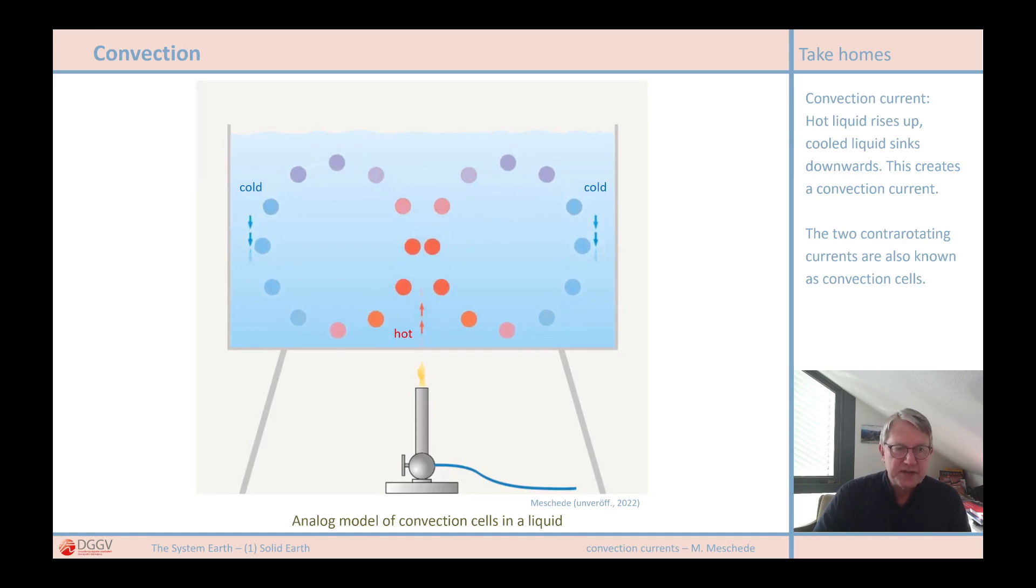Such convection currents can also be found in the Earth's mantle and most probably also in the Earth's core. The Earth's mantle is not liquid like water, but it is mobile, except that the movements there occur at extremely low speeds. We measure it in centimeters per year, not centimeters per second like in our water model. Centimeters per year, that is the velocity dimension that we know from plate movements. And so the Earth's mantle is able to flow over periods of time that ultimately span millions of years.